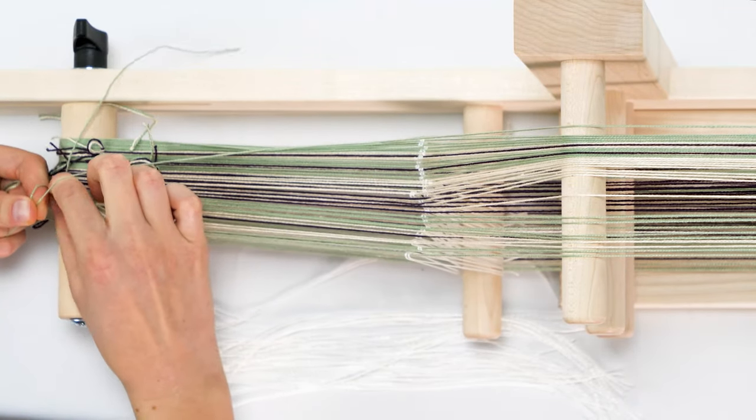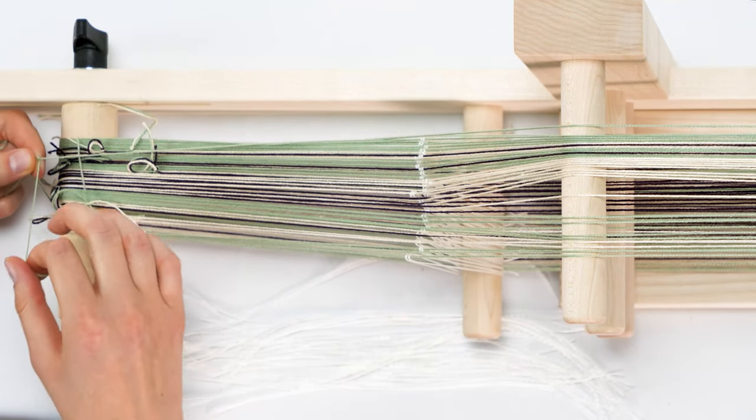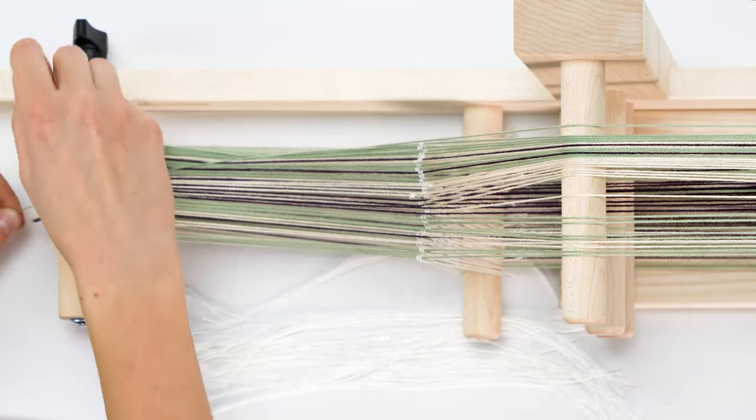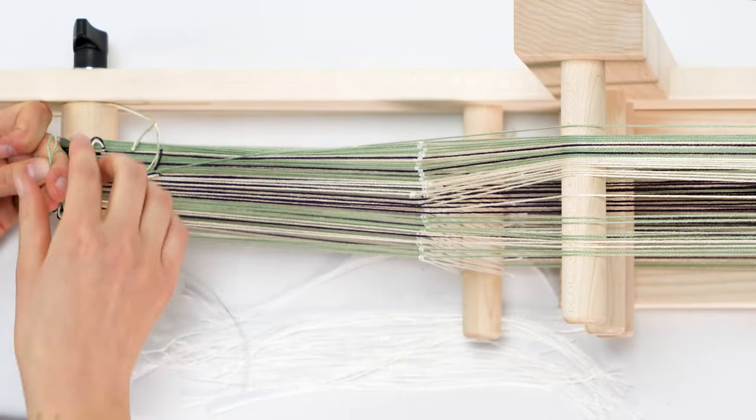Take the two ends and begin like you are tying your shoes. Wrap the thread around twice instead of once and tighten it. Tie another knot on top to keep this from coming undone.